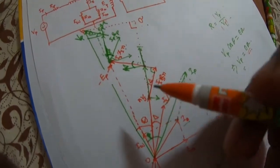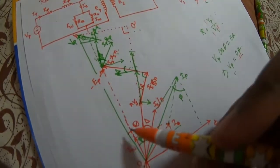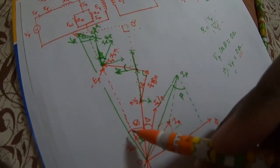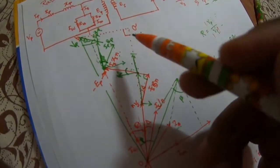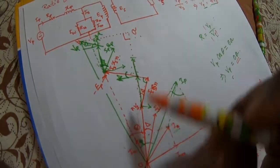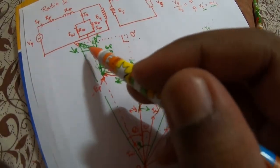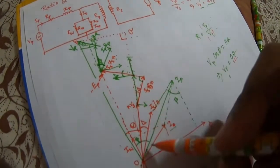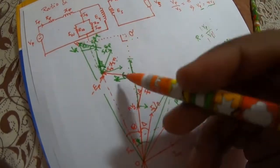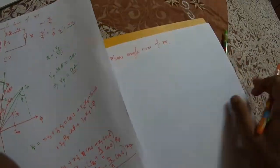From triangle OAB, we find the value of θ. We know that tan θ equals perpendicular by base. Since this is 90 degrees, the perpendicular is AB and the base is OA. We had already found the value of OA in the previous class. In this class we will only find the value of AB.